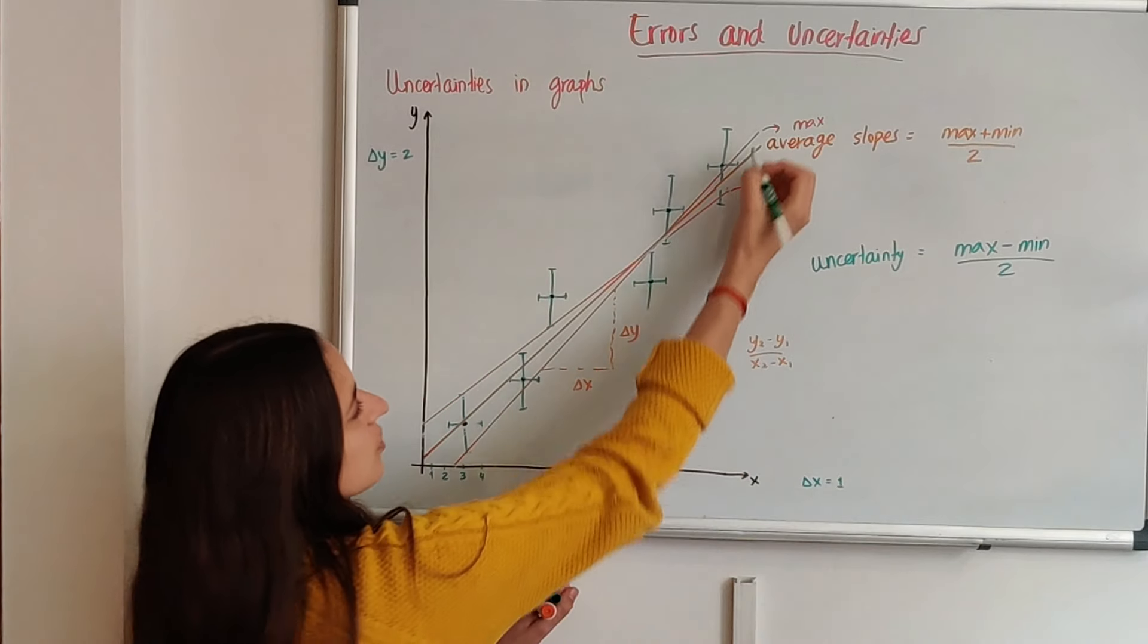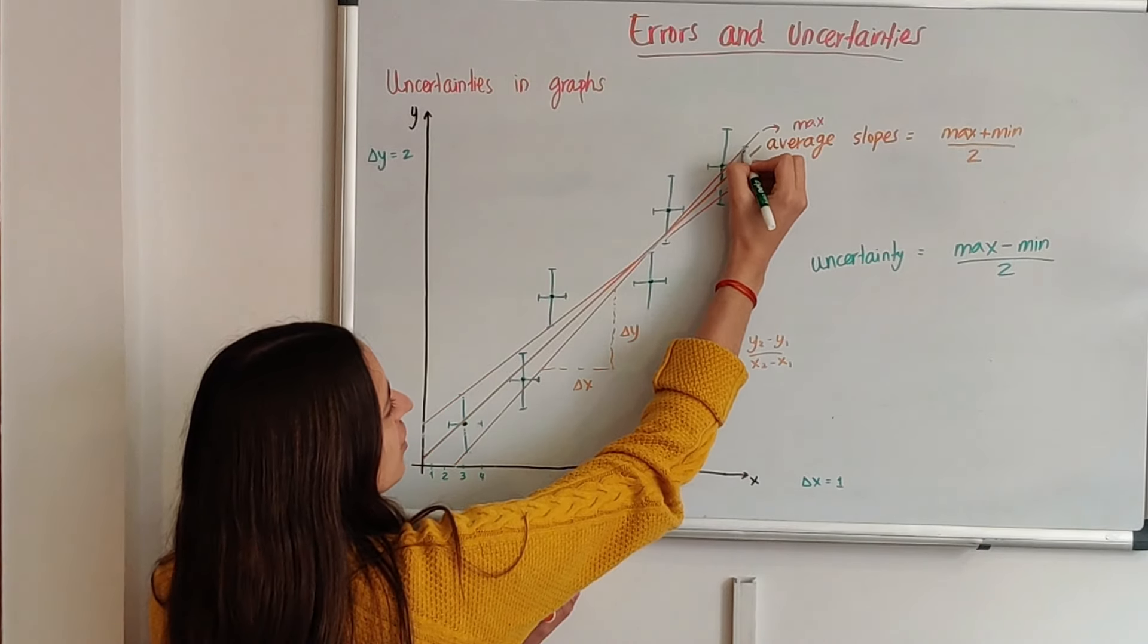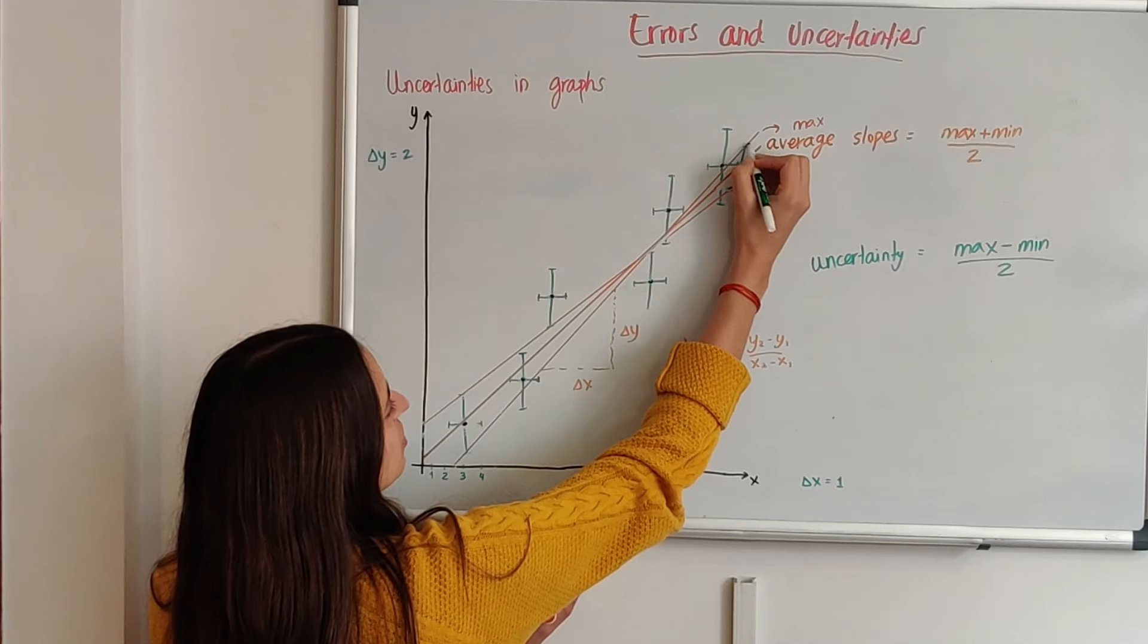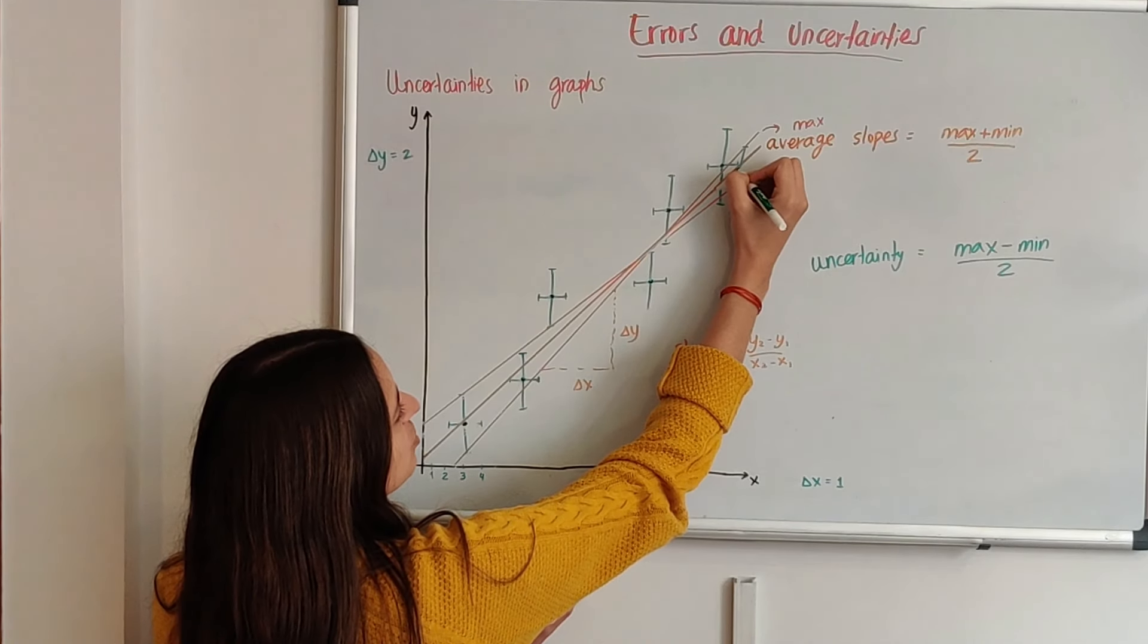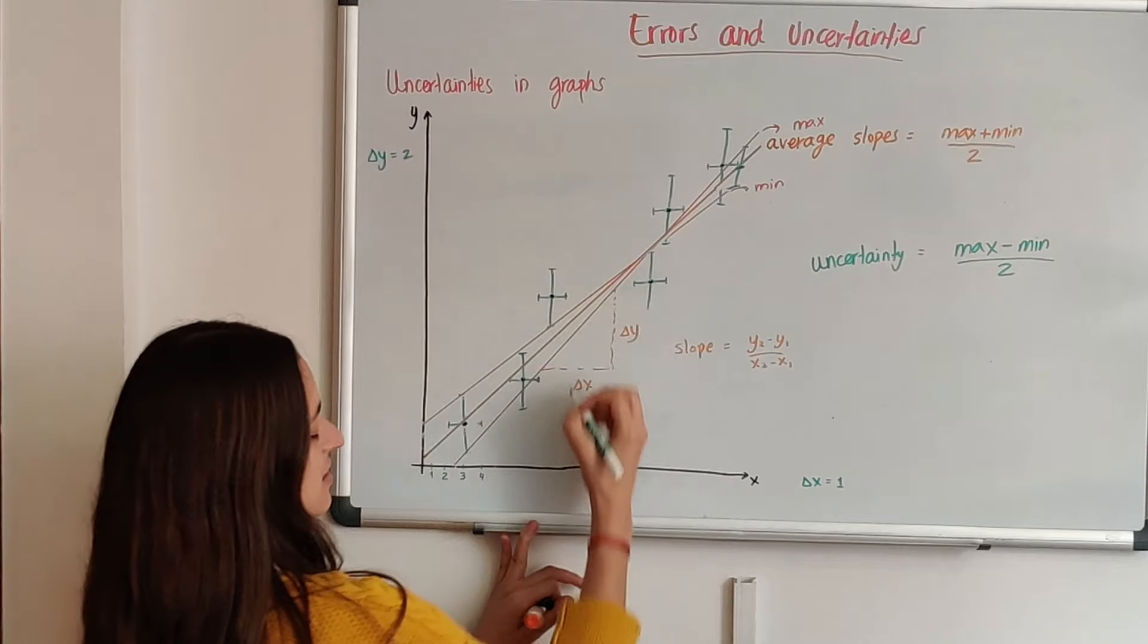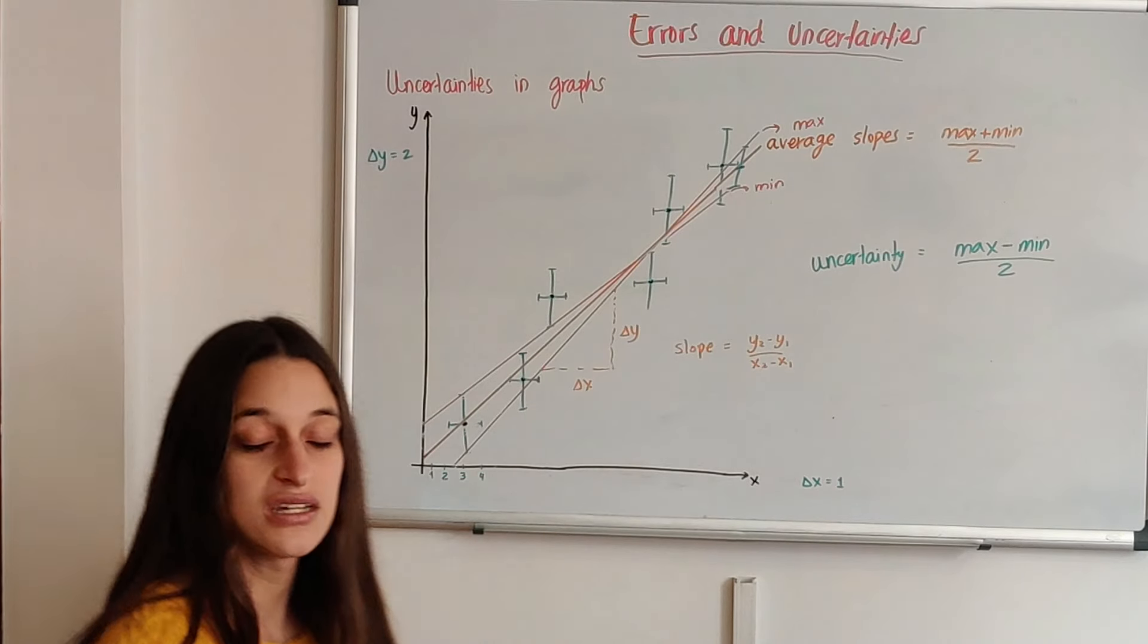Why? Because that will give you this distance over here between the maximum and the minimum, divided by 2 just gives you like that size between your lines.